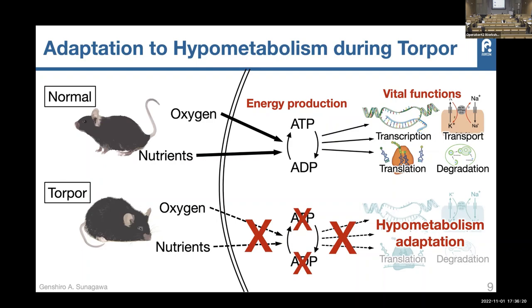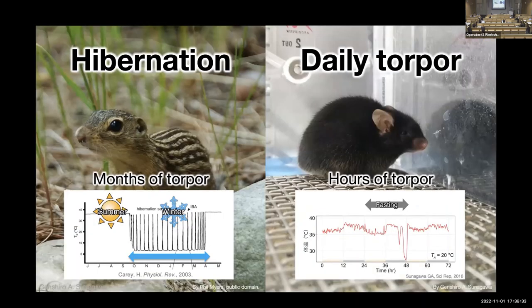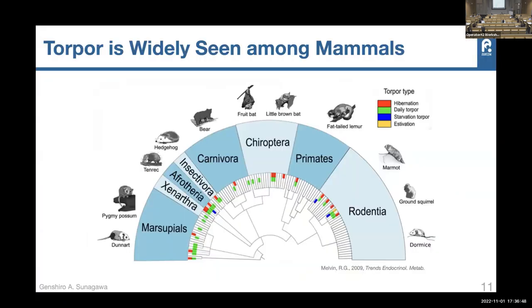If we could understand those mechanisms, it will be a big step forward for human hibernation. A long torpor is called hibernation — months of torpor. The shorter version, hours of torpor, is called daily torpor. Among mammals, we believe that in the past perhaps every mammal was able to enter hibernation, but now many have lost that function.